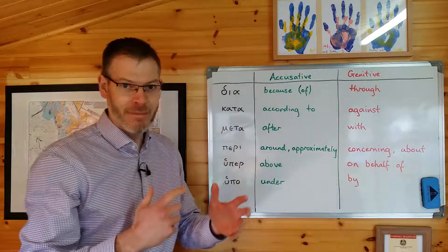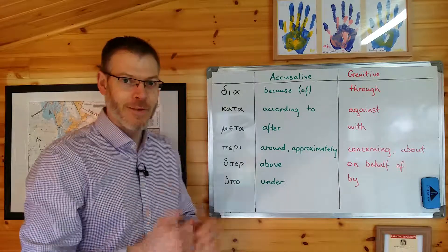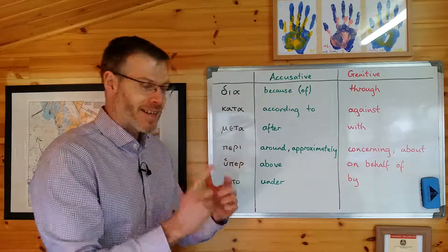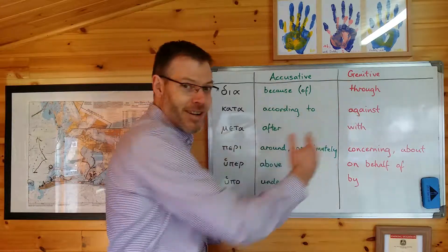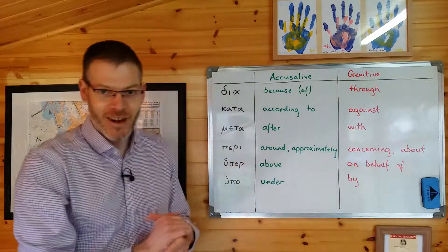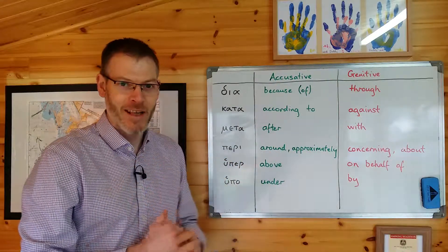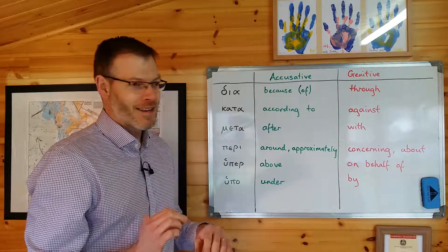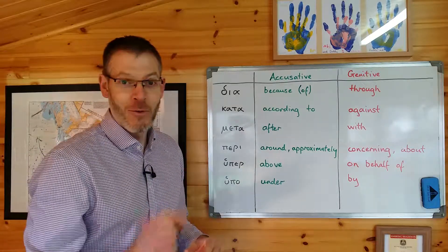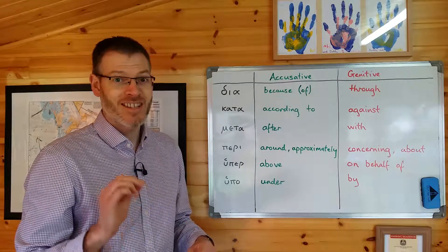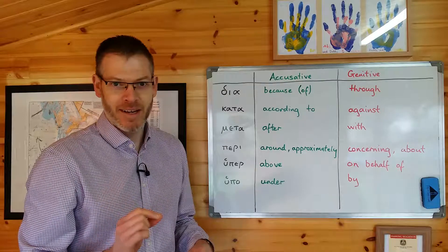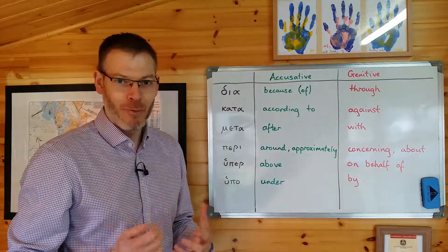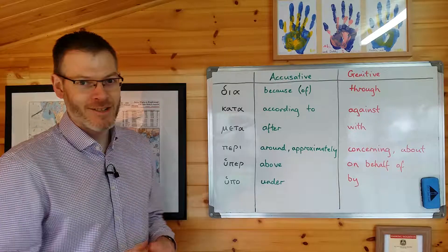Don't go jumbling them up or half-remembering them backwards. If you remember them in that order, you will automatically get the accusative and the genitive in the correct order as well. With mnemonics, the sillier the better — because if they're vivid, they'll be memorable, and if they're memorable, you'll be able to remember them. So here goes.